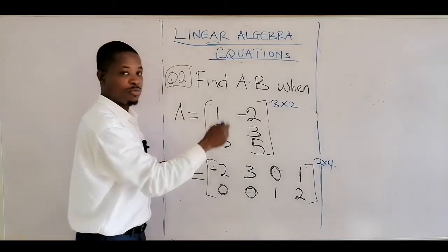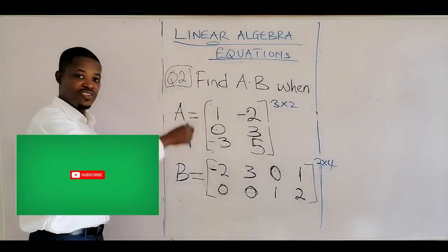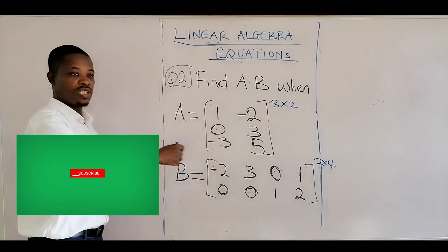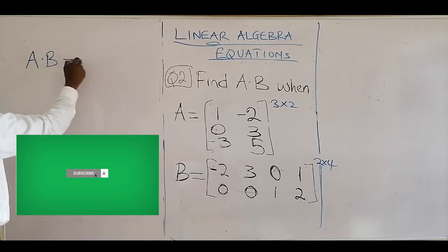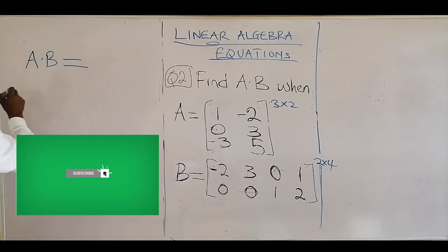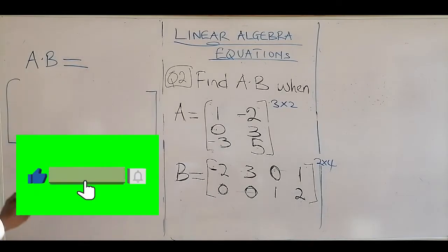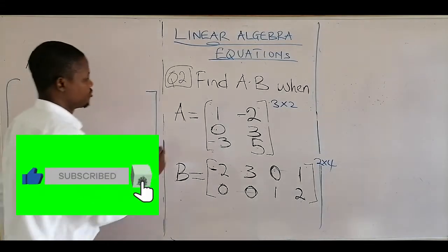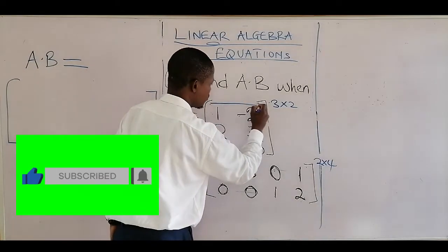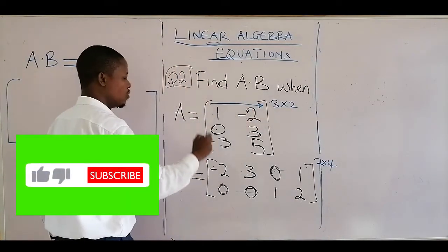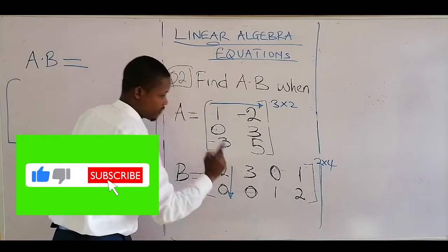Now A dot B, A times B, will be equal to the following. When you're multiplying matrices, it will be a row against a column.